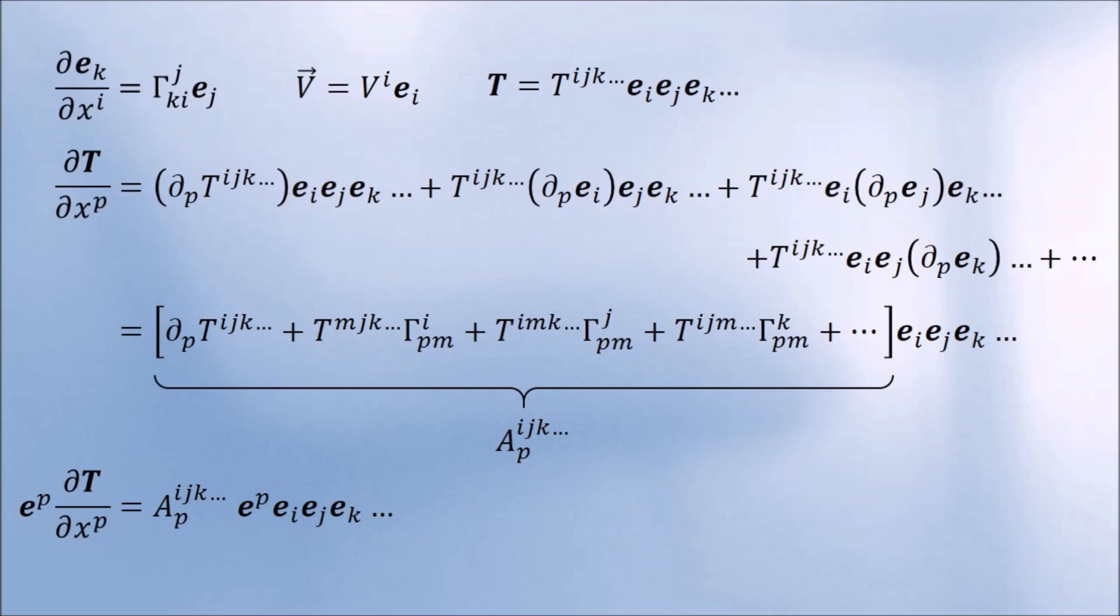The upper index bases are simply the lower index bases contracted with the inverse metric. The new object is again an invariant. We can also formulate tensors with upper index bases, called dual bases.